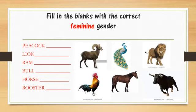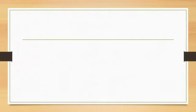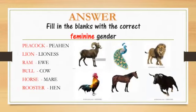Let us now look at the answers. The feminine genders for the following are: Peacock — Peahen. Lion — Lioness. Ram — Ewe. Bull — Cow. Horse — Mare. Rooster — Hen.